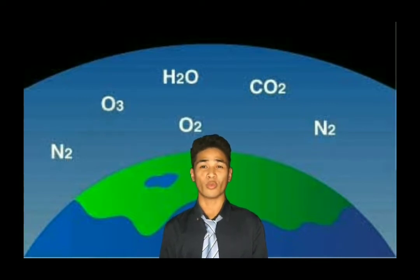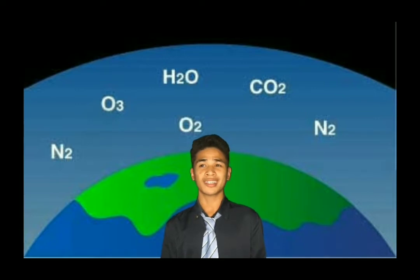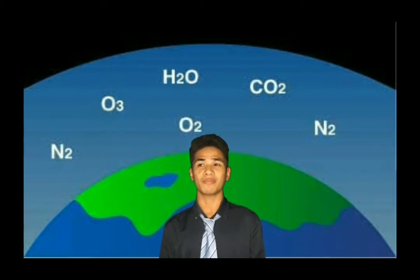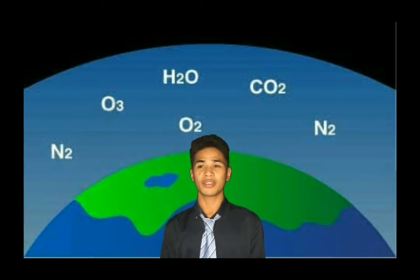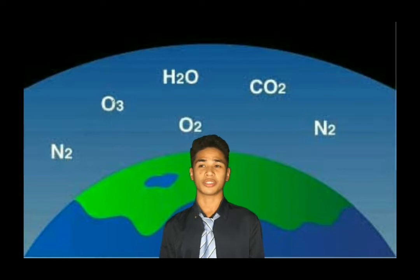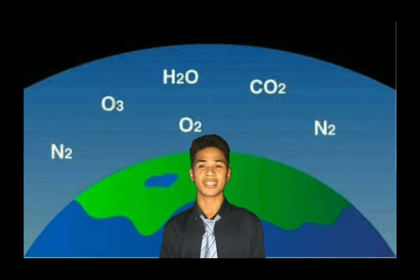Fourth and last but not the least, the atmosphere contains all the air in the Earth's system. It extends from less than 1 meter below the planet's surface to more than 10,000 kilometers above. The upper portion of the atmosphere protects organisms of the biosphere from the sun's ultraviolet radiation. It also absorbs and emits heat.